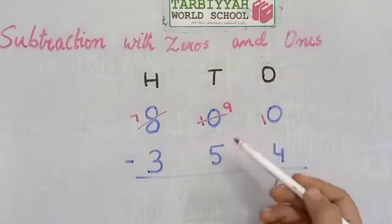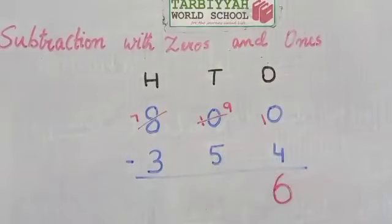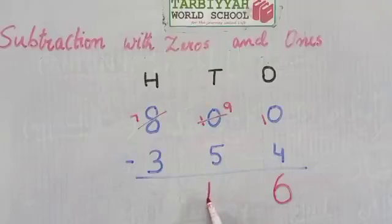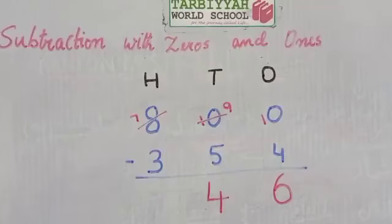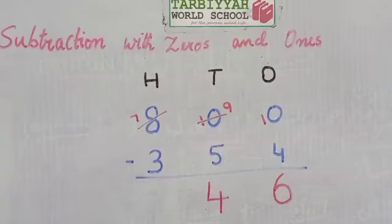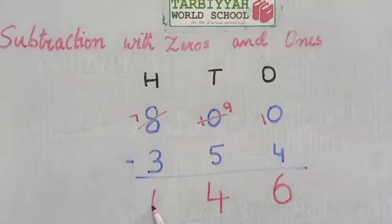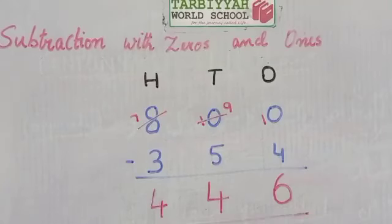Now it is possible: 10 minus 4 is 6. Then 9 minus 5 is 4, and 7 minus 3 is 4. So the answer is 446.